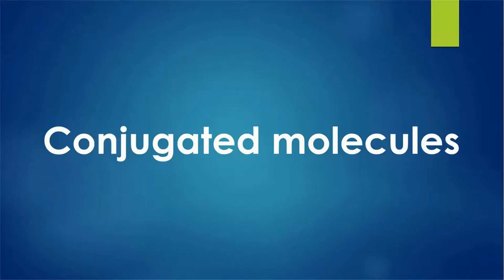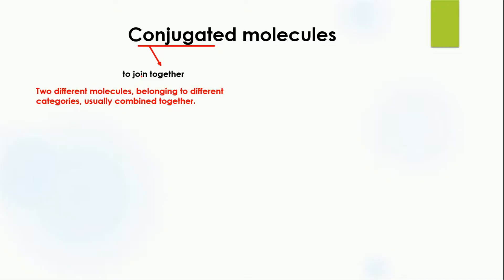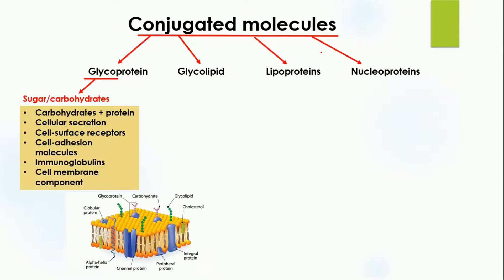Welcome to Ahmed Coaching. I'm Dr. Anam, and today we are going to study about conjugated molecules. The word conjugate means to join together, so conjugated molecules are molecules which are formed when two different molecules belonging to different categories combine together — categories like carbohydrates, proteins, and lipids. There are typically four important conjugated molecules: glycoprotein, glycolipid, lipoproteins, and nucleoproteins.